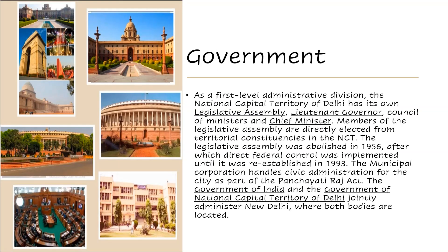Now, a brief overview of the government in Delhi. As a first-level administrative division, the National Capital Territory of Delhi has its own legislative assembly, lieutenant governor, council of ministers, and chief minister. Members of the legislative assembly are directly elected from territorial constituencies in the NCT. The legislative assembly was abolished in 1956, after which direct federal control was implemented, until it was re-established in 1993. The municipal corporation handles civic administration under the Panchayati Raj Act. The Government of India and the government of the NCT of Delhi jointly administer New Delhi.